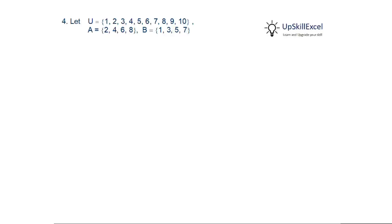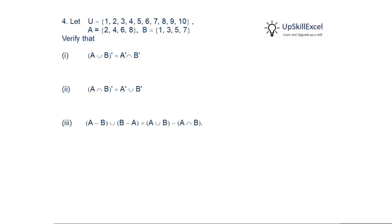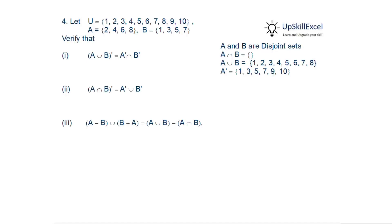Let U = {1 to 10}, A = {2,4,6,8}, and B = {1,3,5,7}. We note that A and B are disjoint sets with no intersection. We calculate A union B = {1,2,3,4,5,6,7,8} — note 9 and 10 are not included. A complement, B complement, A minus B, and B minus A are also calculated. Since A and B are disjoint, A minus B equals A and B minus A equals B.